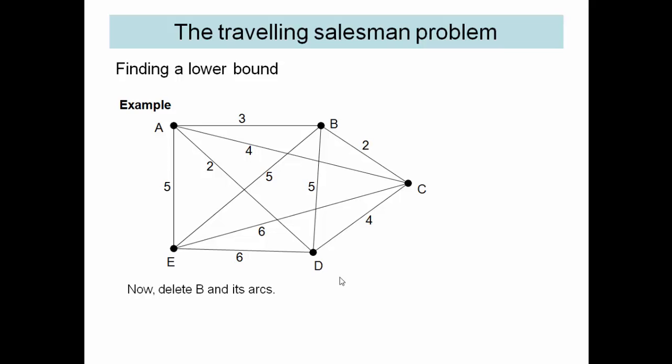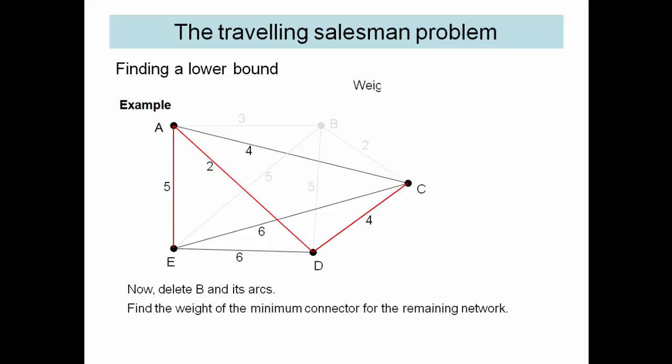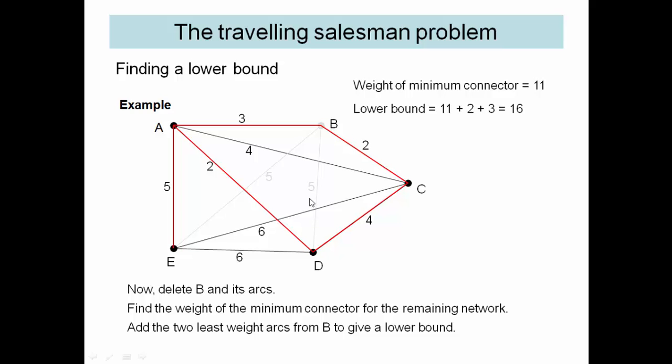We could do the same thing deleting node B and the arcs that go from there. Like so. Find the minimum connector and add the two smallest arcs. You can see quite clearly here that this isn't a Hamiltonian cycle. We only have one arc going in here. We have three going in here.